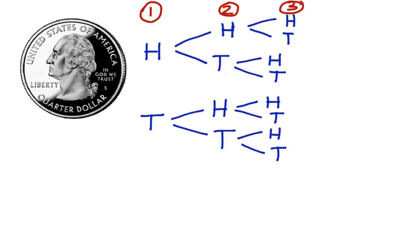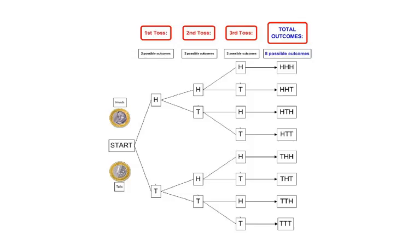This is a very simple tree diagram. Let's look at this tree diagram in a little bit of a nicer form. Here's our tree diagram. You can see that on the first toss, there were two possible outcomes: heads or tails. On the second toss, there were two possible again: heads and tails, heads and tails.